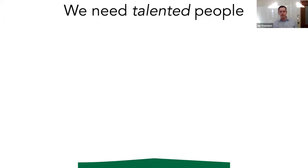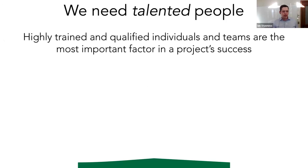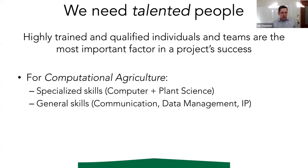Moving on to people — we need talented people. Highly qualified and trained individuals and teams are, to me, the most important factor in project success. If we look at computational agriculture in particular, we need people with very particular attributes: a combination of both specialized skills and general skills.